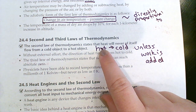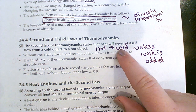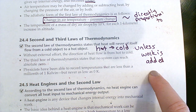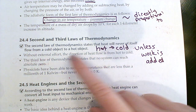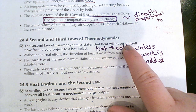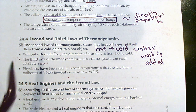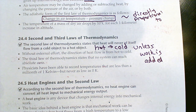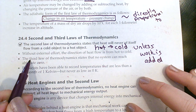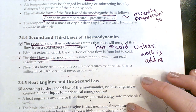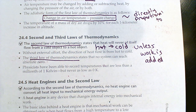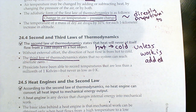Heat moves from hot to cold unless we do work. 'Never of itself' means if we don't add work, it's not going to go backwards. The third law of thermodynamics says no system can reach absolute zero. Physicists have been able to get things very cold — within one kelvin of absolute zero, less than a millionth of one kelvin — but why can't we get all the way down to zero?